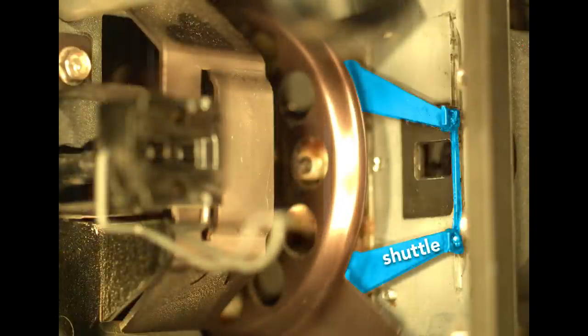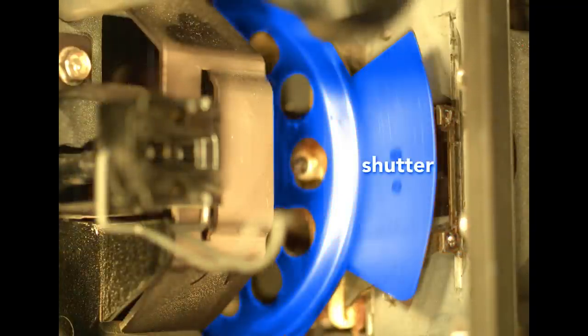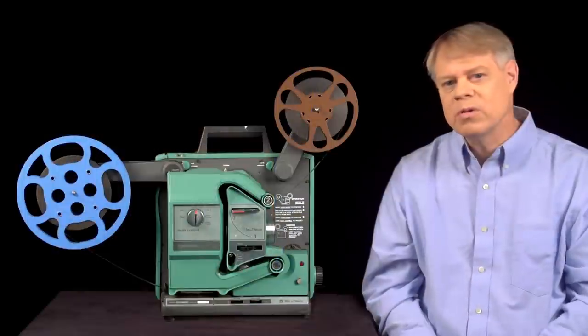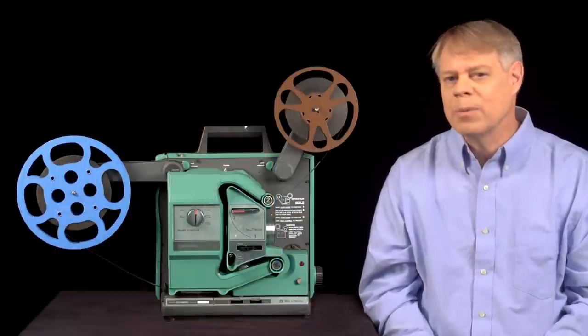We'll look at the shuttle that starts and stops the film, the shutter that strategically blocks light, and the photo sensor that reads the sound, all of which operate in harmony.